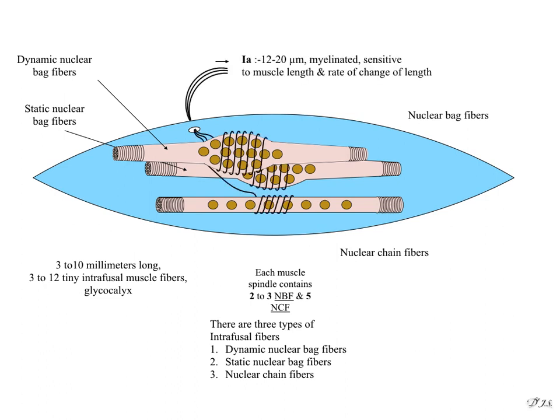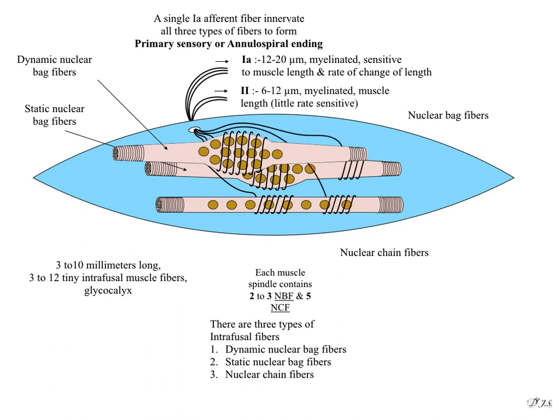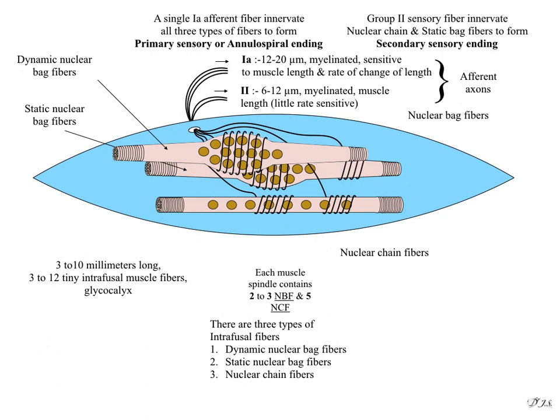Group Ia (first A) fibers are 12 to 20 micrometers, myelinated, and sensitive to muscle length and rate of change of length. A single Ia fiber innervates all three types of intrafusal fibers to form the primary sensory or annulospiral ending. Group II (second) fibers are 6 to 12 micrometers, myelinated, and little rate-sensitive. Group II fibers innervate nuclear chain and static bag fibers to form the secondary sensory ending. Group Ia and Group II fibers are afferent axons.